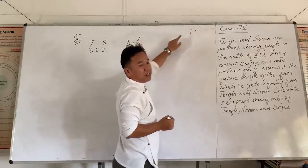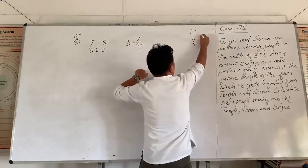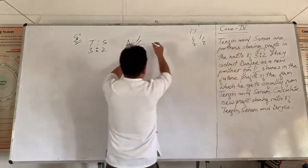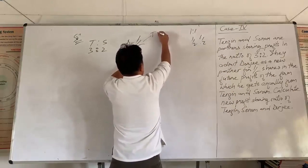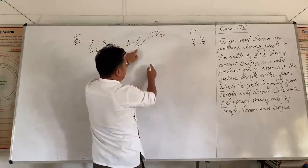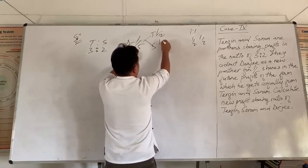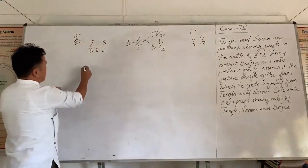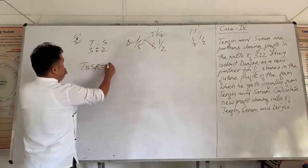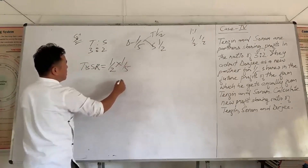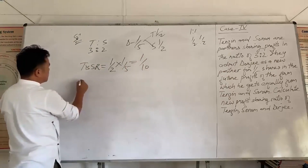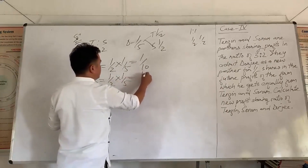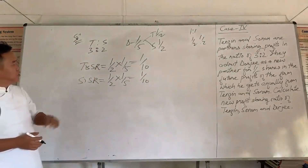Doji gets 1 by 5 equally from Tenzin and Sonam. Equally means in the ratio of 1 to 1, which as fractions is half and half. So Tenzin sacrifices half of 1 by 5, and Sonam sacrifices half of 1 by 5. Tenzin's sacrificing ratio is 1 by 2 multiplied by 1 by 5, which is 1 by 10. Sonam's sacrificing ratio is also 1 by 2 multiplied by 1 by 5, which is 1 by 10.